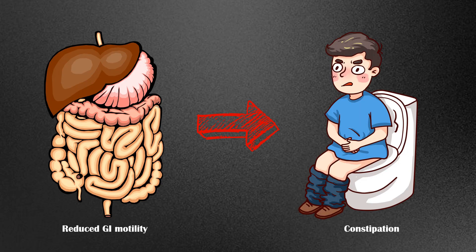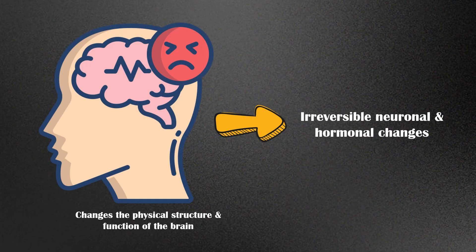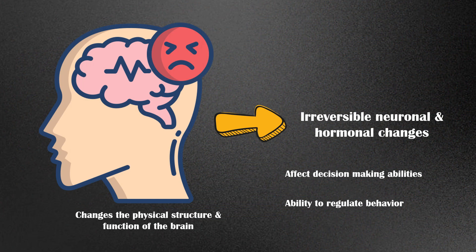Heroin reliably causes reduced gastrointestinal motility, which leads to constipation. Repeated heroin use changes the physical structure and functions of the brain, leading to irreversible neuronal and hormonal changes. Deterioration of the white matter of the brain due to heroin use may affect decision-making abilities, the ability to regulate behavior, and responses to stressful situations.